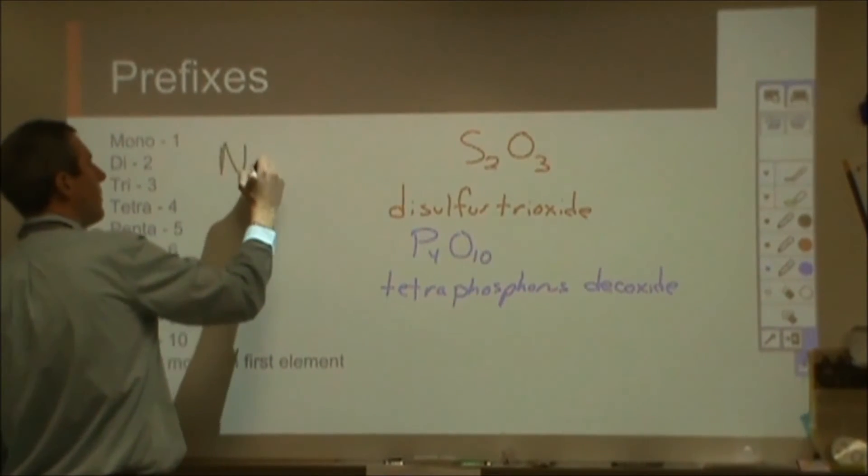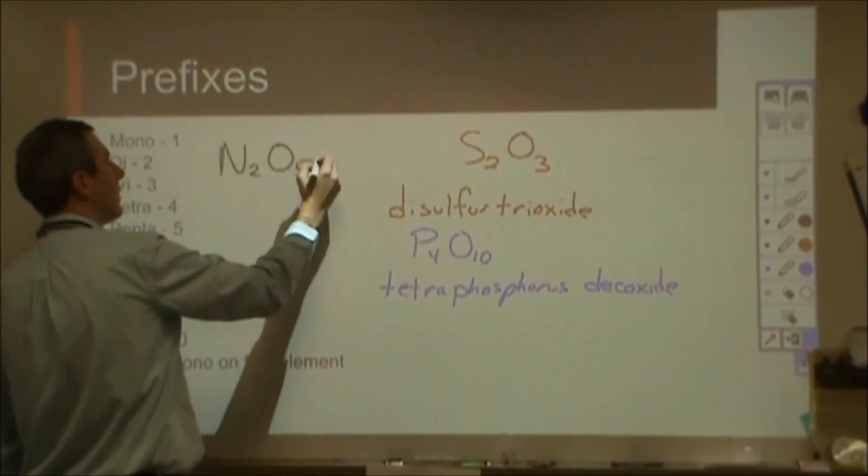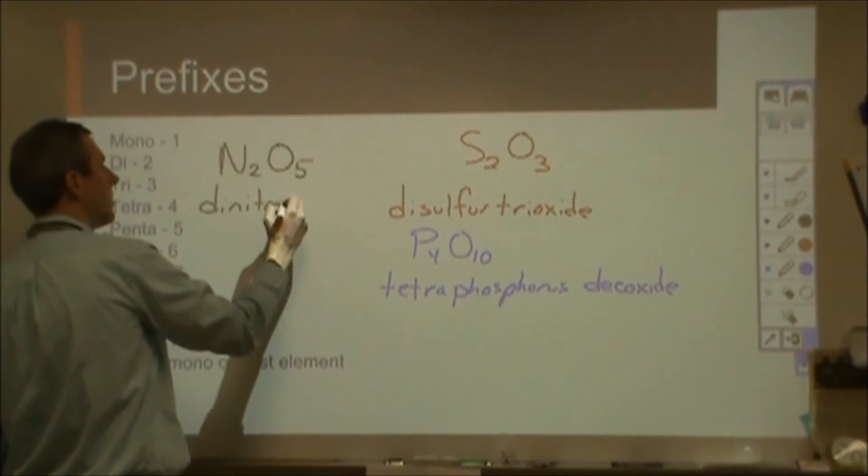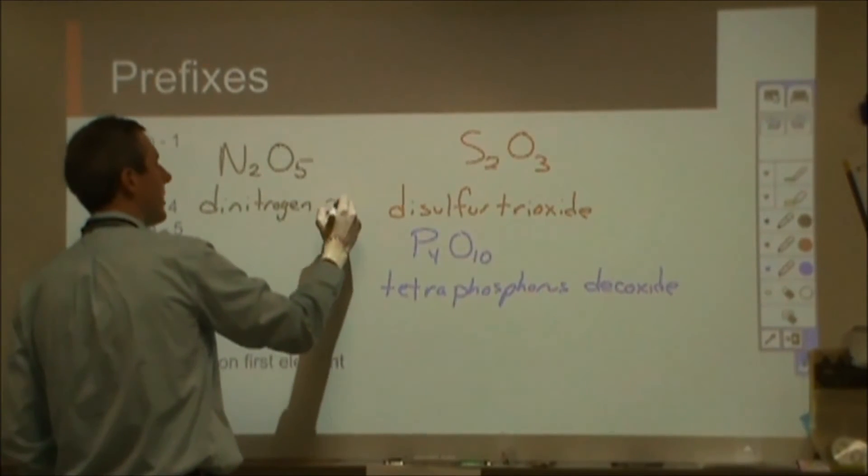If we had N2O5, that would be dinitrogen pentoxide.